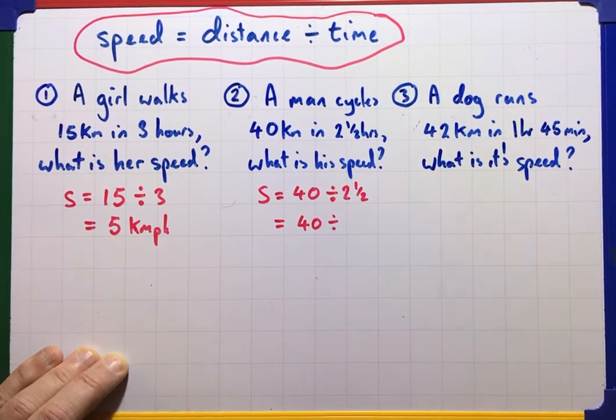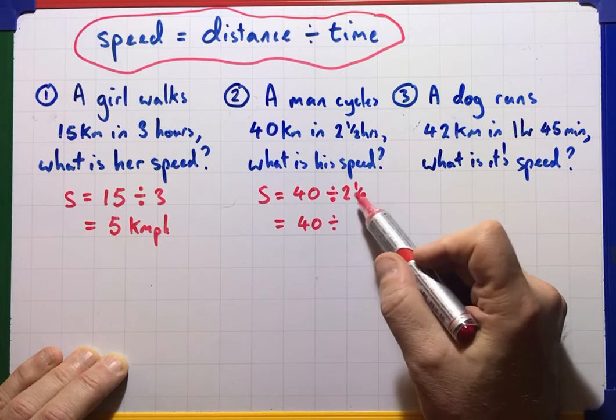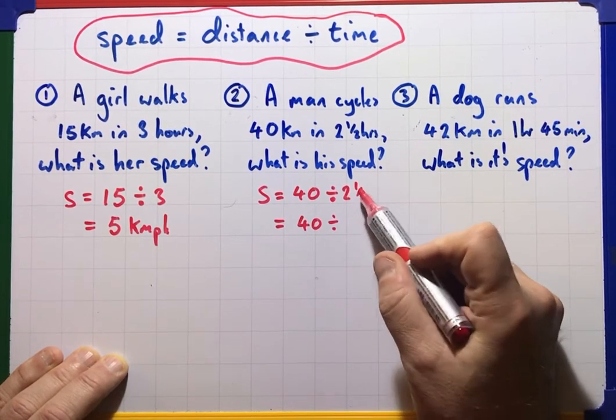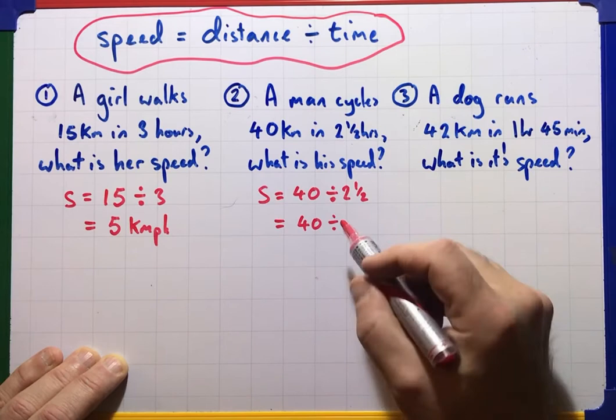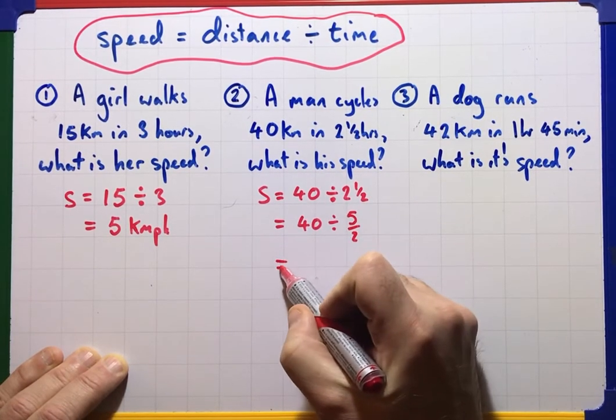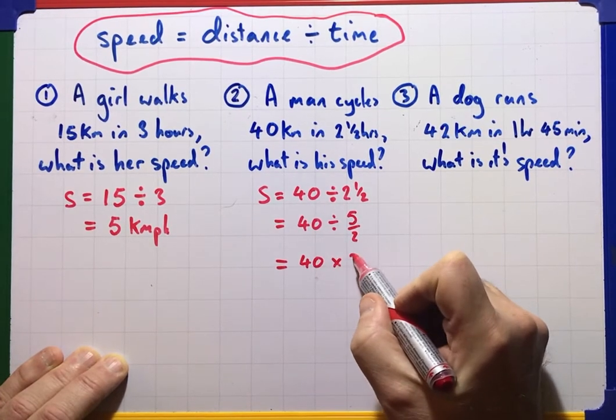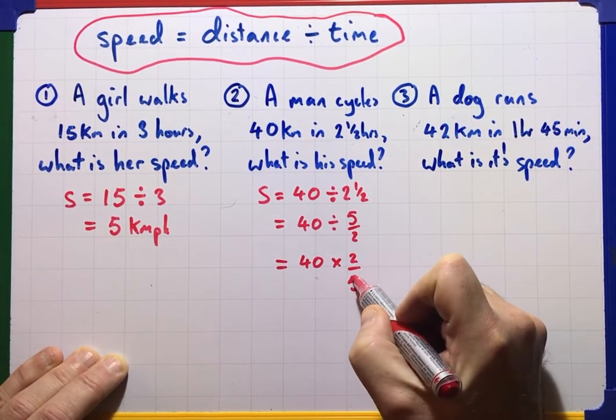So look, 2.5, well, 2 is going to be 4 halves, plus the one we've got, is 5 over 2. Remember, we then turn the fraction upside down and multiply.